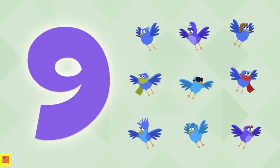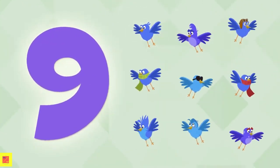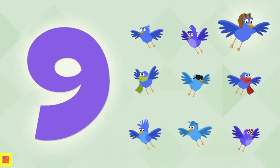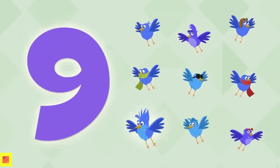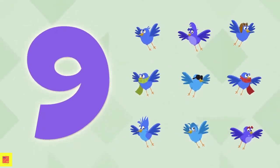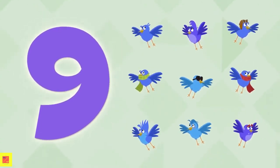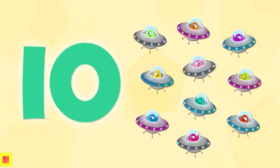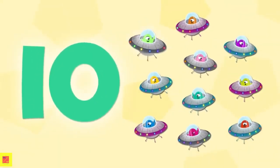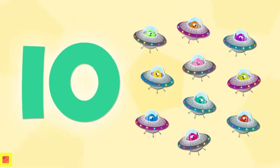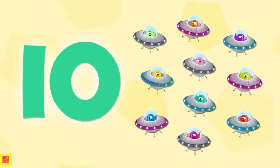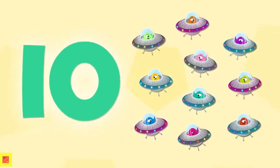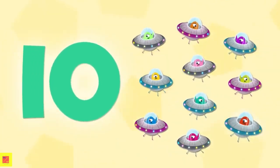This is number 9. There are 9 birds. 1, 2, 3, 4, 5, 6, 7, 8, and 9. The last one we are going to learn is number 10. There are 10 aliens. 1, 2, 3, 4, 5, 6, 7, 8, 9, and 10.